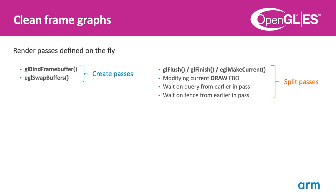Less obvious are some of the scheduling-related behaviors. Waiting on queries and fences enqueued in the current command stream will cause a render pass to get created, so that the queries and fences can be resolved. In cases where a render pass is created, continuing to draw to the surface will result in what we call an incremental render. The future draw calls apply on top of what is already in memory, so the second render pass must effectively do a load upload to populate tile memory with data. This is an expensive operation, so aim to minimize render pass splits.